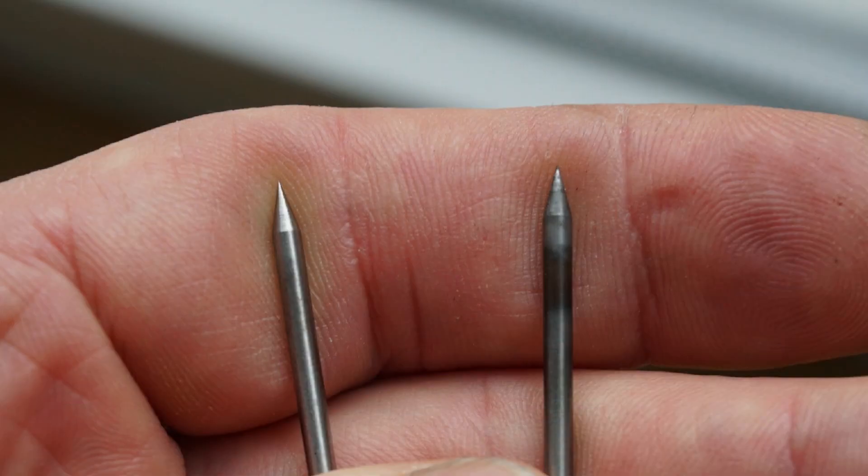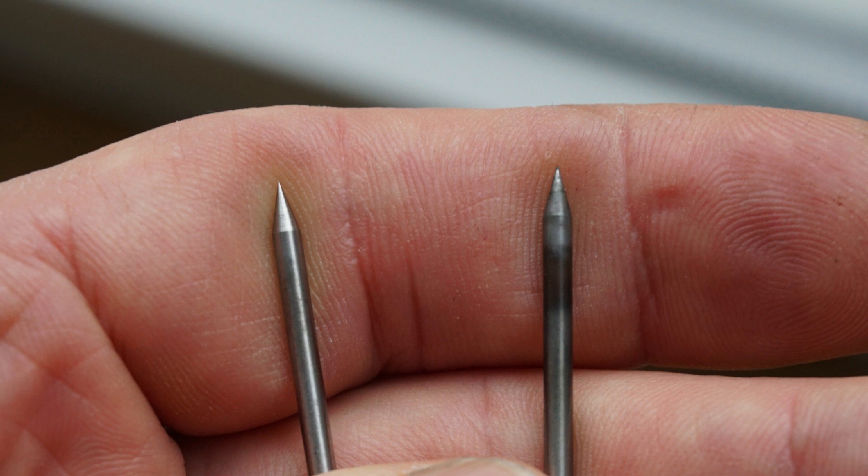To the left here we have an electrode freshly ground for DCEN welding, that is for steel, nickel, titanium and other metals. To the right we have a used electrode. So far nothing special, but now let's look at those electrodes with some magnification.